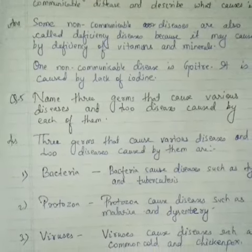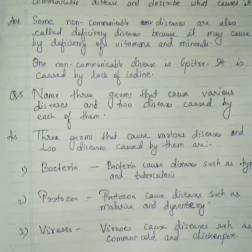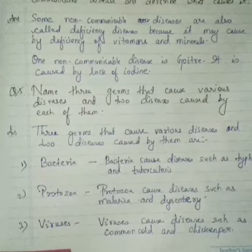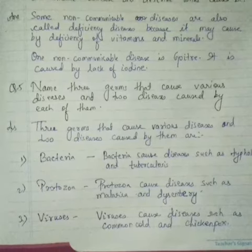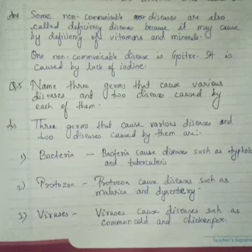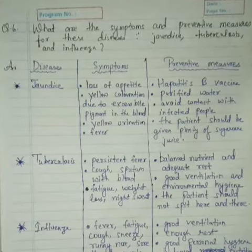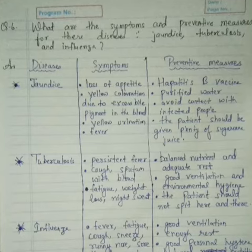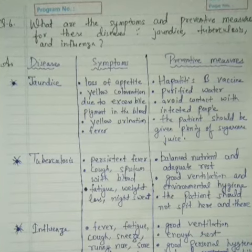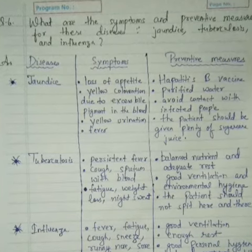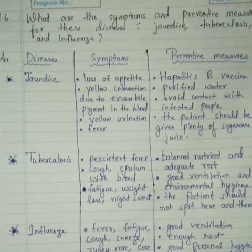Question five: Name three germs that can cause various diseases, and name two diseases caused by each. Bacteria cause diseases such as typhoid and tuberculosis. Protozoa cause diseases such as malaria and dysentery. Viruses cause diseases such as common cold and chickenpox.